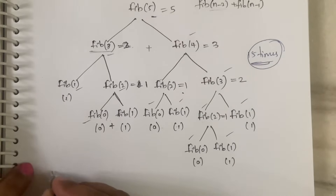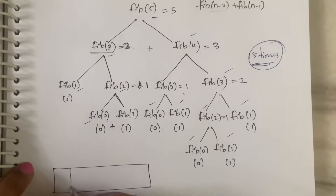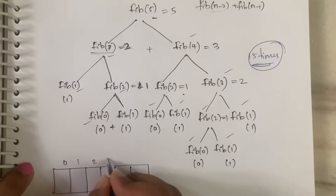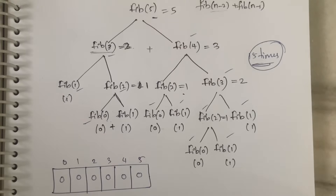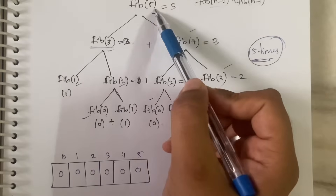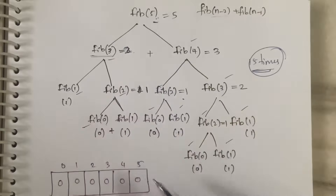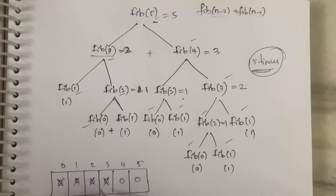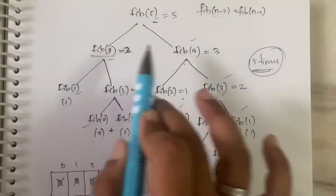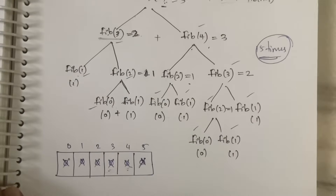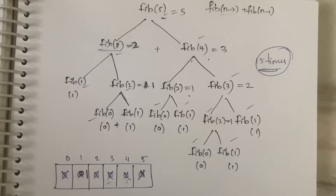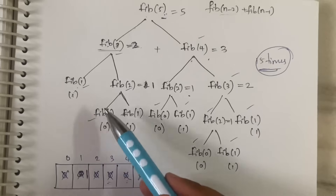Dynamic programming comes into the picture here. We take an array with indices 0, 1, 2, 3, 4, 5 and initially all values are unknown (mark them as x). We still need to compute fib(5), so we break it into fib(3) + fib(4). Neither is known yet, so we break fib(3) into fib(1) + fib(2). fib(1) is known — it is 1 — so we update the array: index 1 = 1.